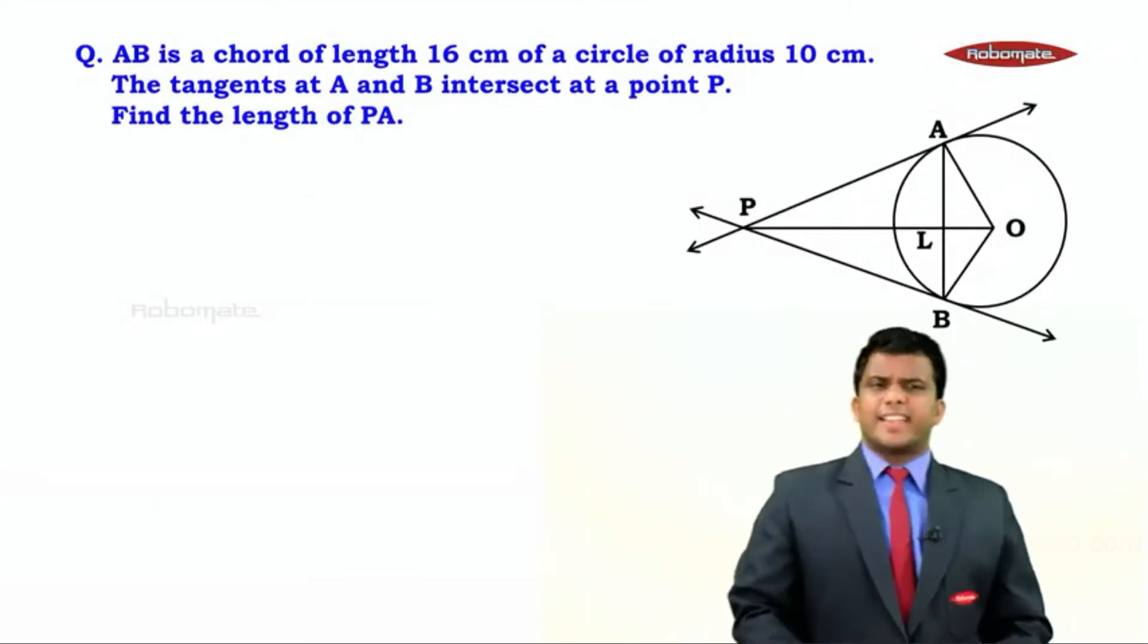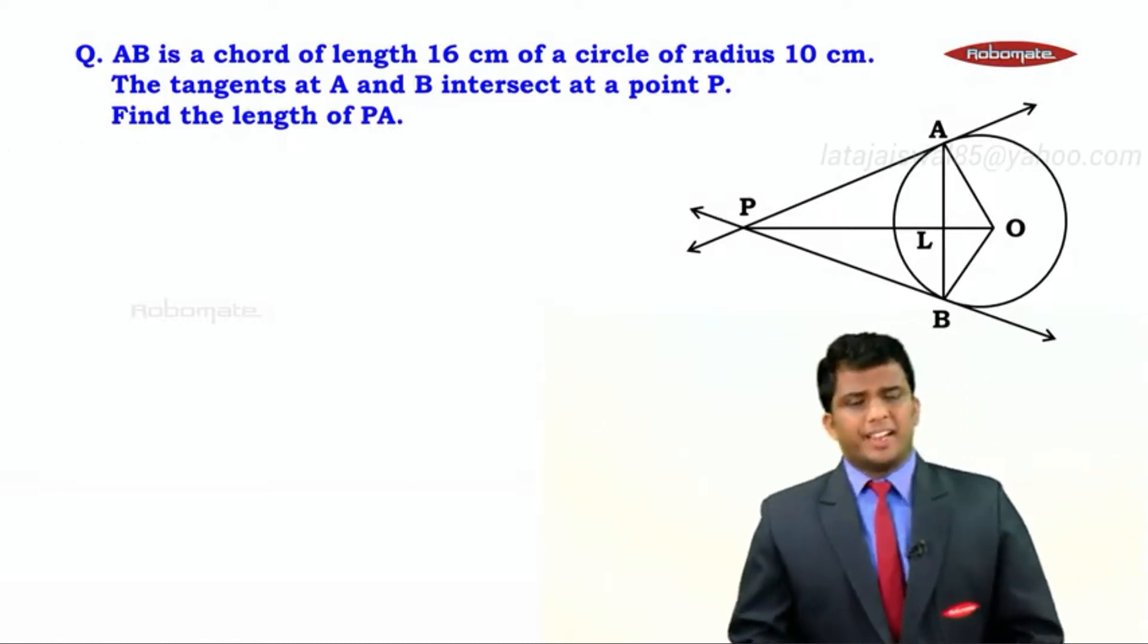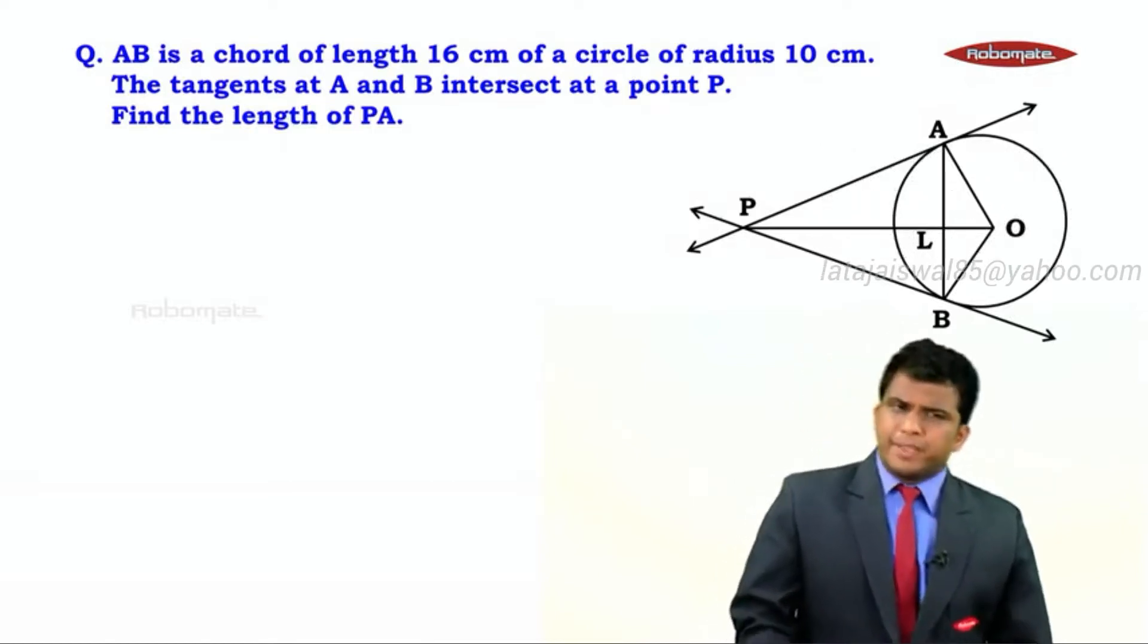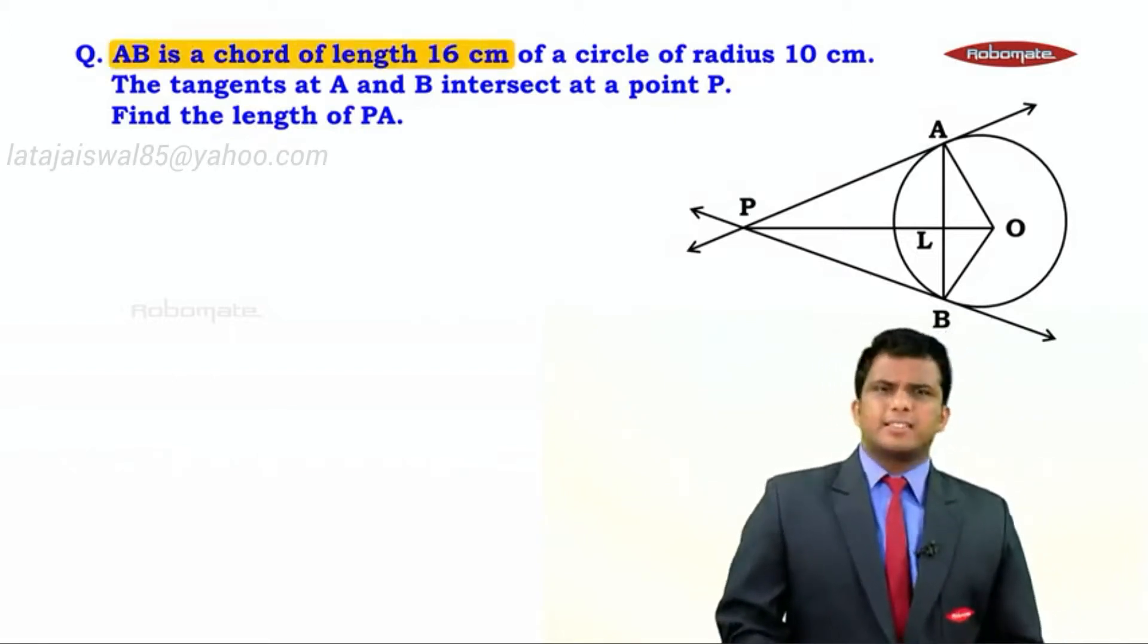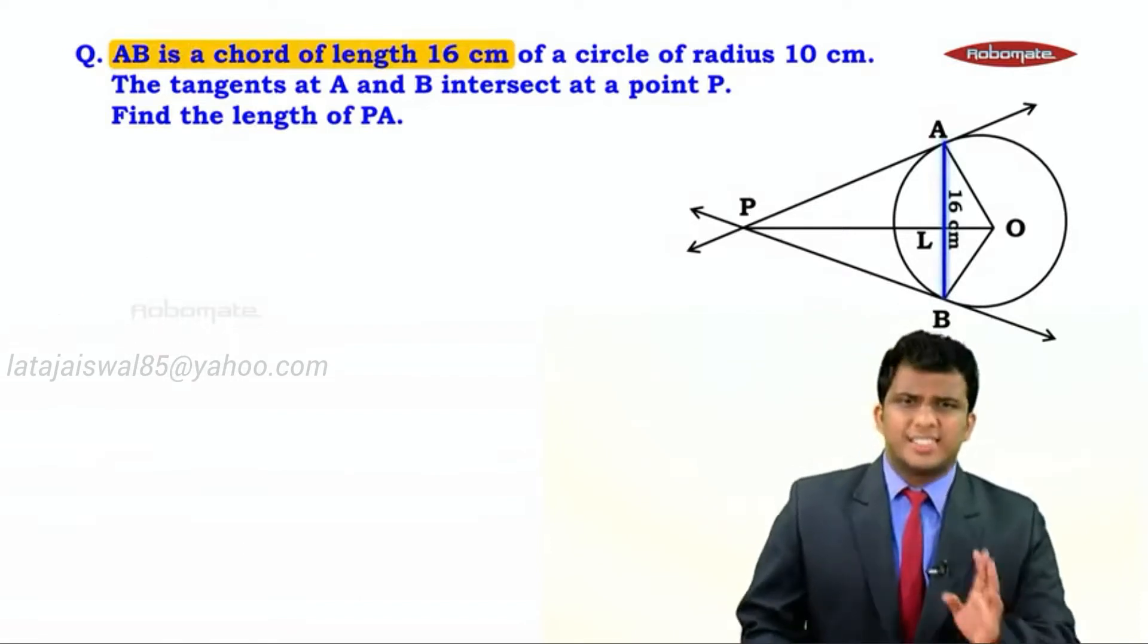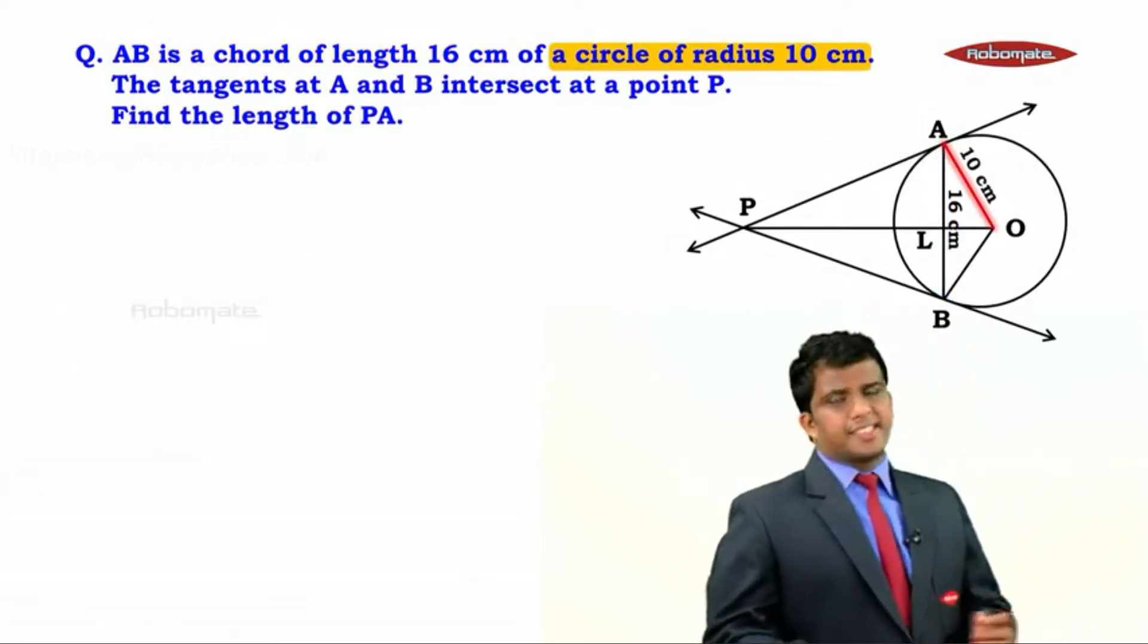The question says AB is a chord of length 16 centimeters of a circle of radius 10 centimeters. The tangents at A and B intersect at a point P. Find the length of PA. Now, over here we have a circle with center O where AB is a chord whose length is given as 16 centimeters, and the radius of the circle is given as 10 centimeters.